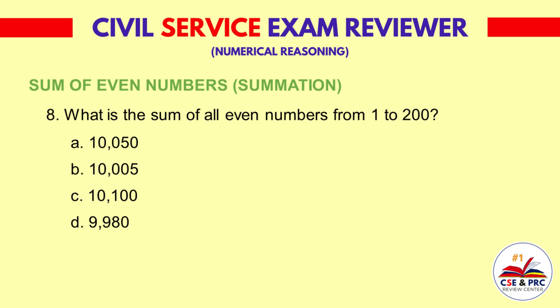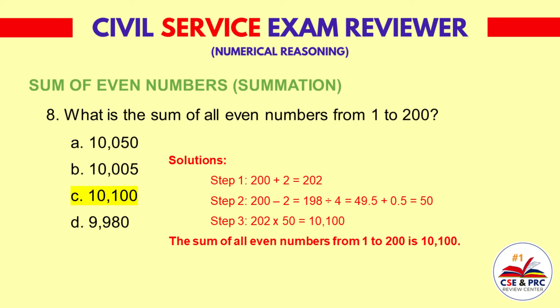Question 8: What is the sum of all even numbers from 1 to 200? a. 10,050  b. 10,005  c. 10,100  d. 9,980. The answer is c. 10,100.